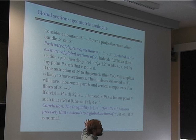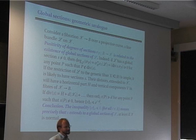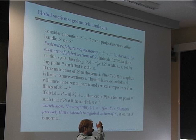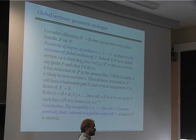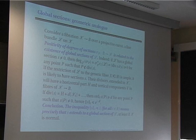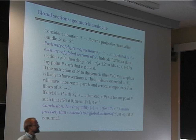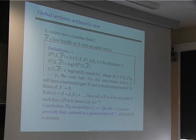This holds at least if the space is normal, because otherwise codimension-one subvarieties don't detect integrality. Basically, to detect the fact that a generic section on the generic fiber is integral means that it has norm smaller than one, and then it extends to a global section. So if it extends to a global section, I will have positivity for heights of points outside of the divisor.